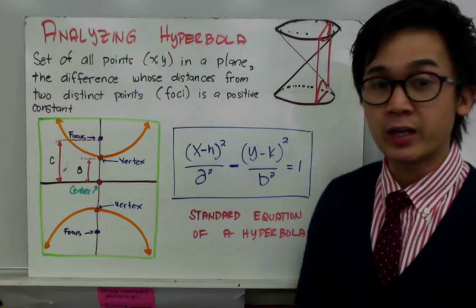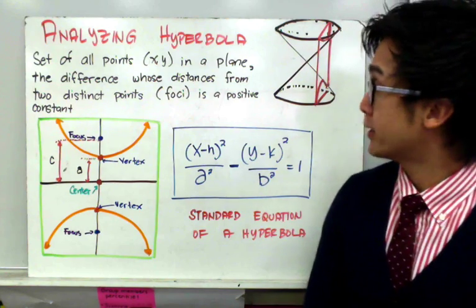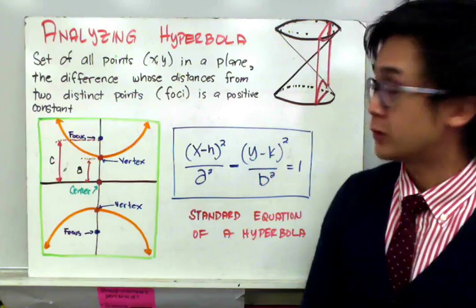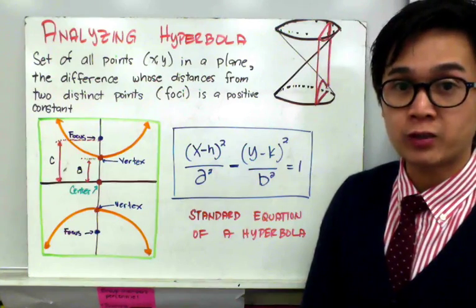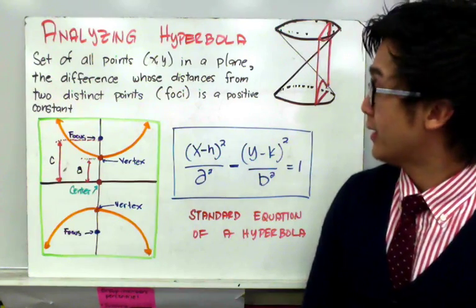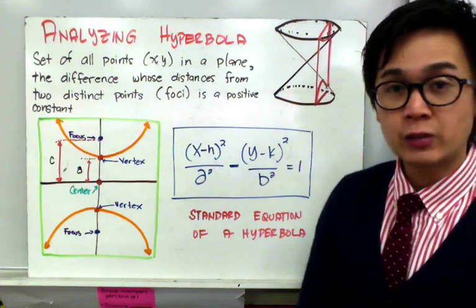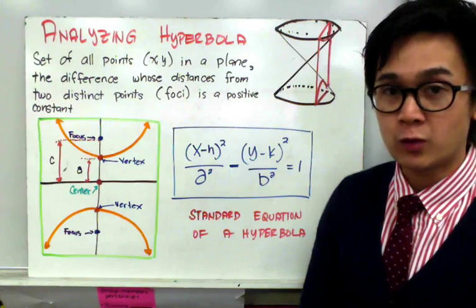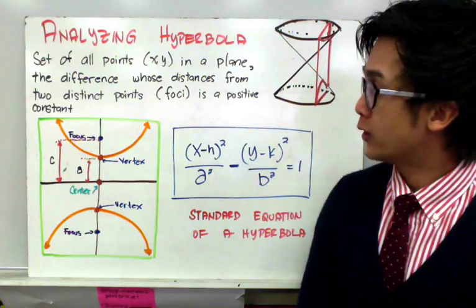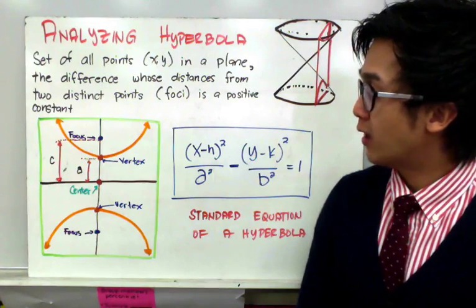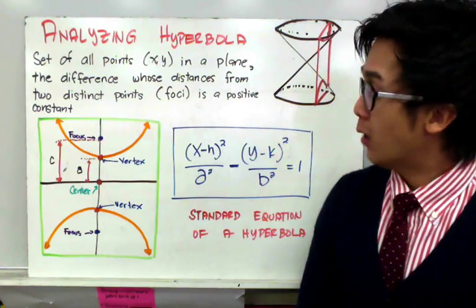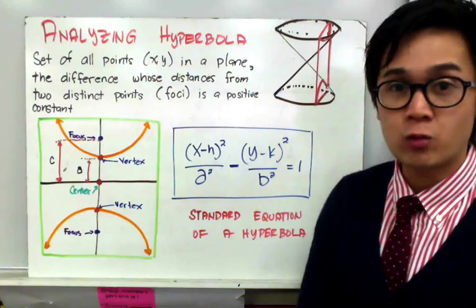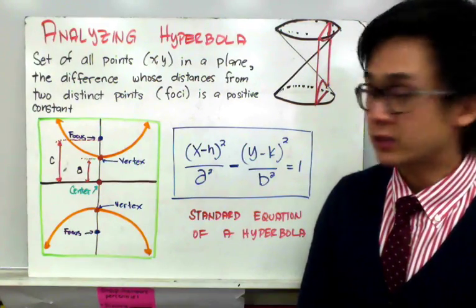By definition, a hyperbola is a set of all points in a plane where the difference of distances from two distinct points called the foci is a positive constant. Just like any other conic section, we have two sets of formulas or two sets of visuals for hyperbola — one that is opening vertically and the other one that is opening horizontally.